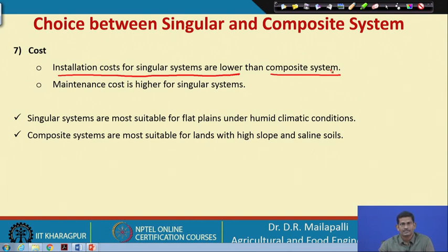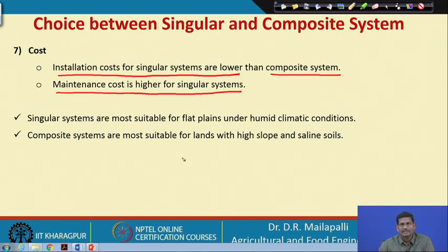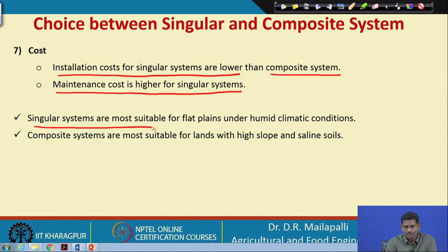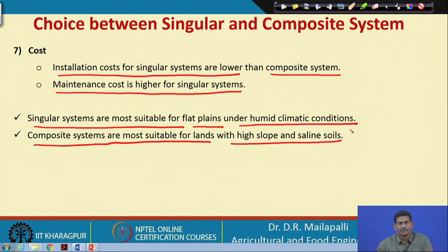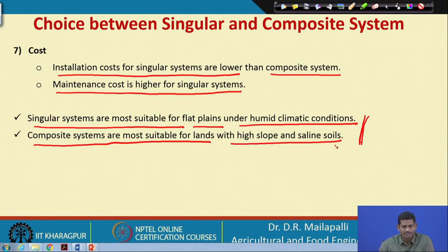Regarding cost, installation cost for singular systems is lower than for composite systems because composite systems contain many bends and joints. However, the maintenance cost is higher for singular systems because they get damaged frequently during maintenance. Singular systems are most suitable for flat plains under humid climatic conditions, whereas composite systems are most suitable for lands with higher slopes or saline soils.